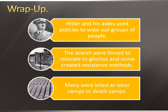To wrap up: Hitler and his aides used policies to wipe out groups of people. We discussed the SS squads, the ghettos, the labor camps, and the death camps. Jewish people were forced to relocate to ghettos and some fought back in different ways, but many were unfortunately killed. The picture here shows the Holocaust Memorial in Berlin. It only opened a couple of years ago and has a museum — it's a moving memorial to those lost during this horrific event in human history. Please make sure you answer the questions, and I will talk to you later.